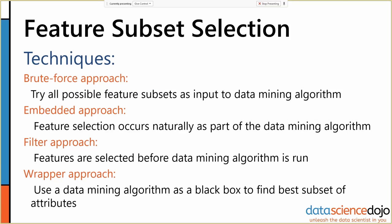There are several techniques for feature subset selection: you can brute-force it by trying all different feature subsets; some popular algorithms do feature selection naturally; you can use a filter approach, leveraging exploration and domain knowledge to filter out bad features; or you can use a data mining algorithm on your data mining algorithm to find the best subset of attributes.